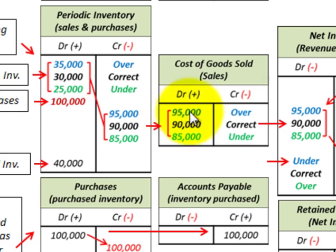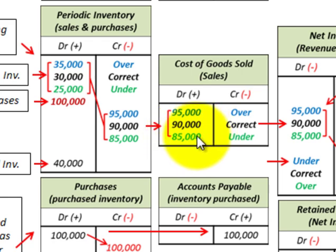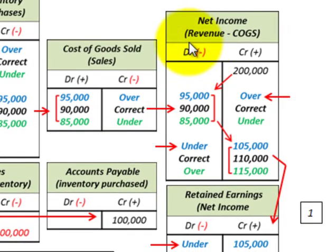For revenues of $200,000: with overvalued inventory, cost of goods sold is $95,000; the correct amount is $90,000; and with undervalued inventory, cost of goods sold is $85,000. Now we look at how these affect net income.